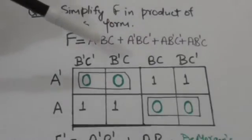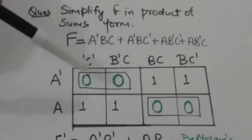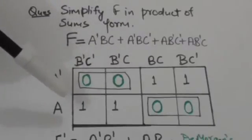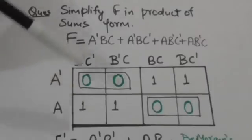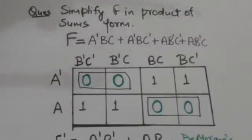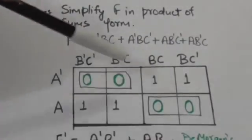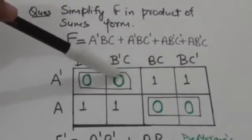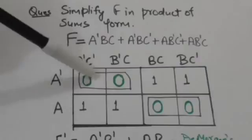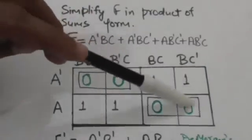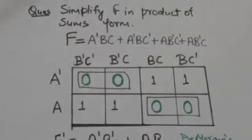Now we have to form valid groups of adjacent squares which are marked by 0. Here two groups are formed: this group has two adjacent squares, and in this group there are also two adjacent squares.